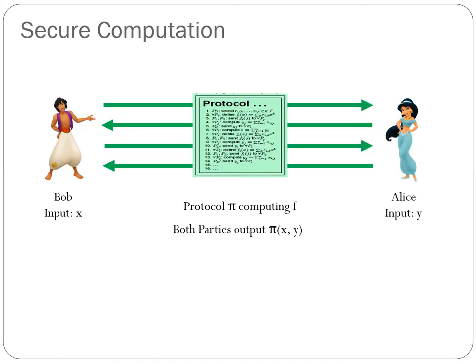Today we will talk about secure computation. We consider the two-party setting for simplicity. There are two parties who have private inputs x and y. They want to jointly compute a function f on their inputs. To do so, they run a protocol pi on their inputs and output the protocol output. The protocol should satisfy two properties: it should be correct, meaning the function output should be the same as the protocol output, and it should be secure.